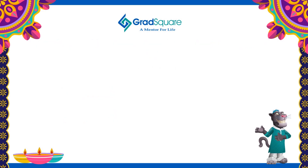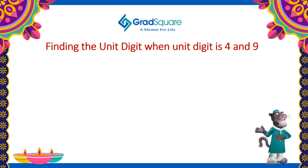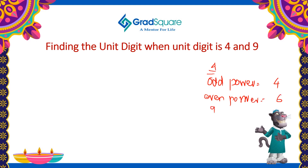Finding the unit digit of the numbers ending with 4 or 9: In case of 4, when raised to an odd power, the unit digit of the resultant will be 4. When raised to an even power, the unit digit will be 6. In case of 9, when raised to an odd power, the unit digit will be 9. In case of even power, the unit digit will be 1.